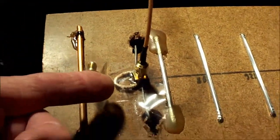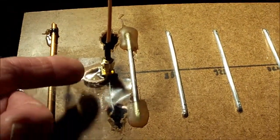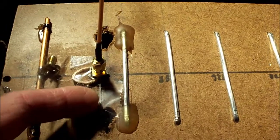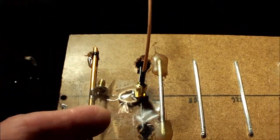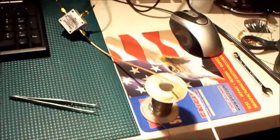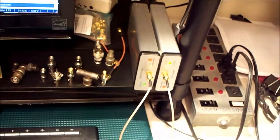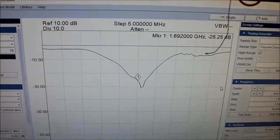You can see here this is the balun, whichever way you want to say it. This is the dipole here going into the directional coupler and the analyzer. So as you can see the curve on the antenna.